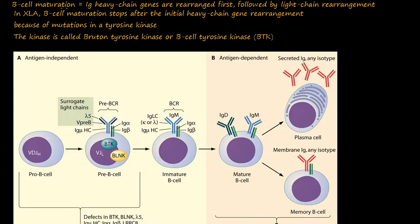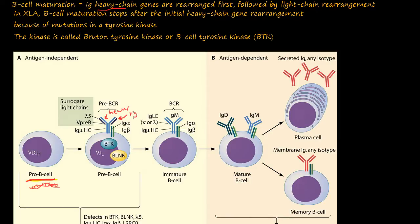How B cells mature: Ig heavy chain genes are rearranged first in the pro-B cell. Inside the pro-B cell, there is a certain DNA structure, and part of that DNA recombines to form the heavy chain of the immunoglobulin.